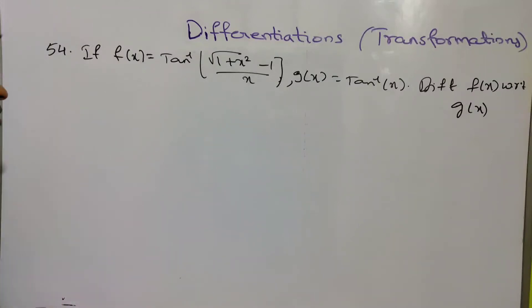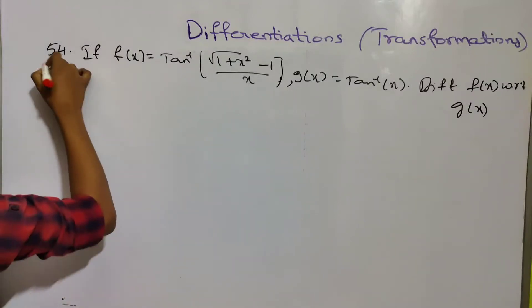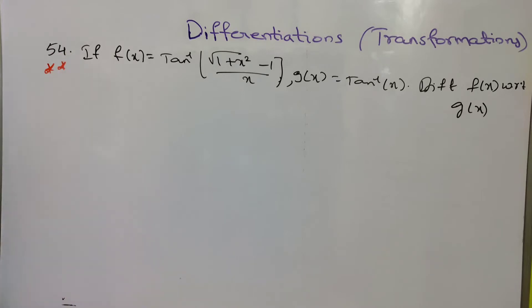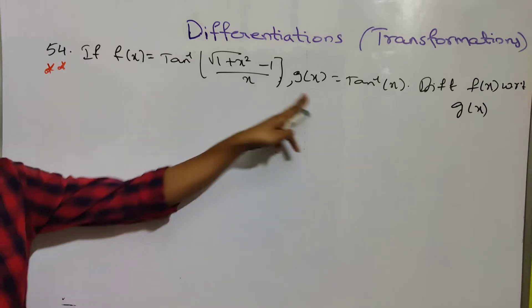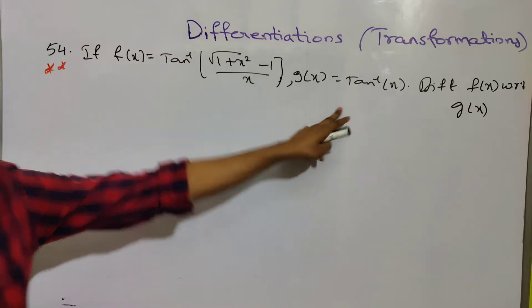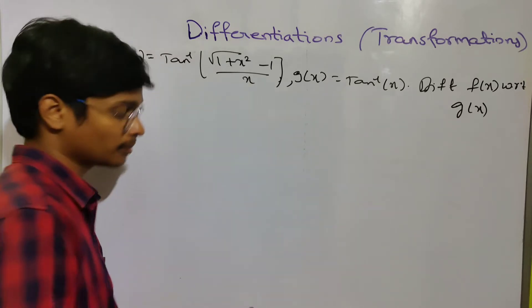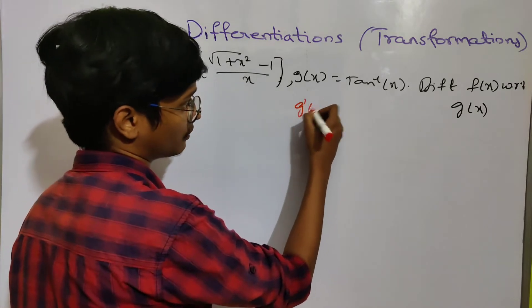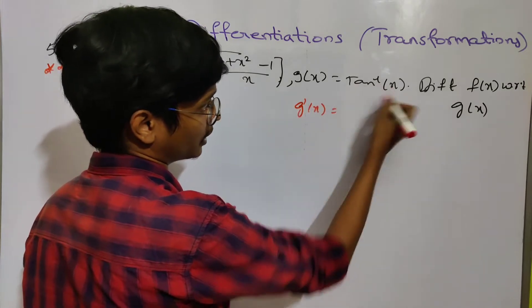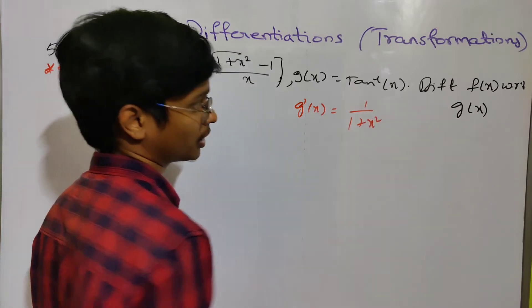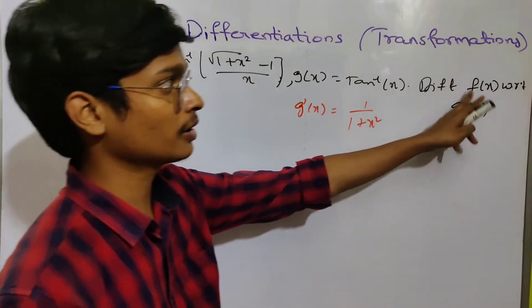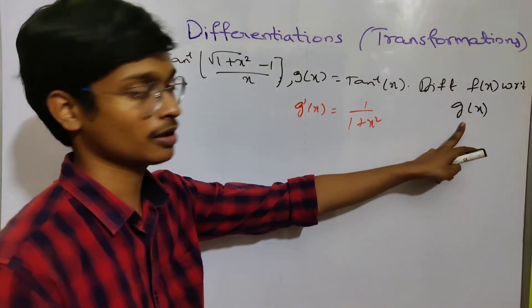This problem is rare, so we have to get this sum on paper. We have f of x and g of x. We have to find g prime of x, and d by dx of tan inverse x is 1 by 1 plus x squared. We have to find out f prime of x by g of x.